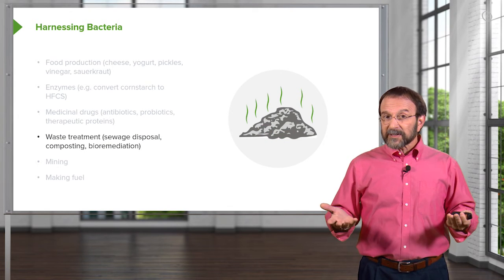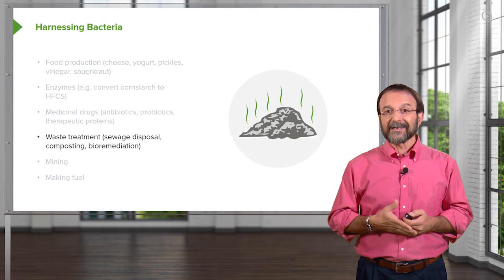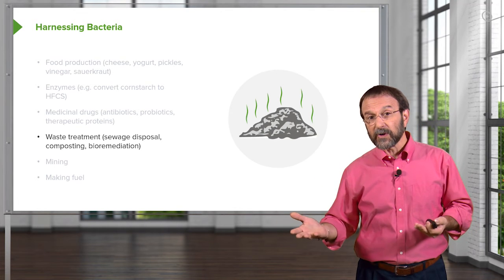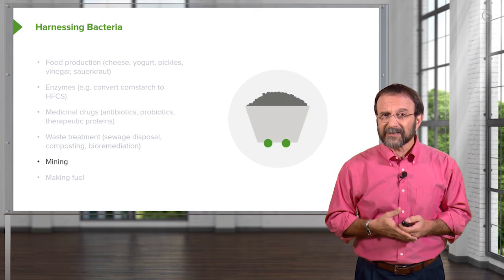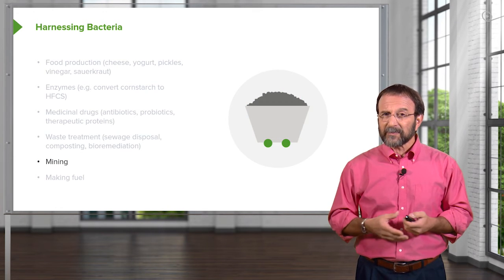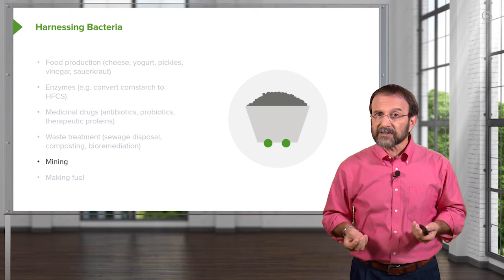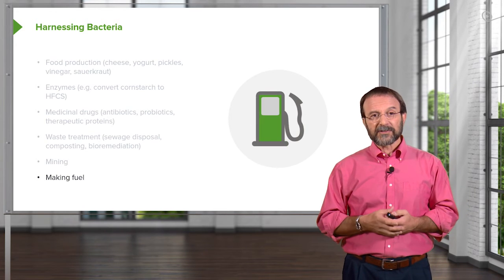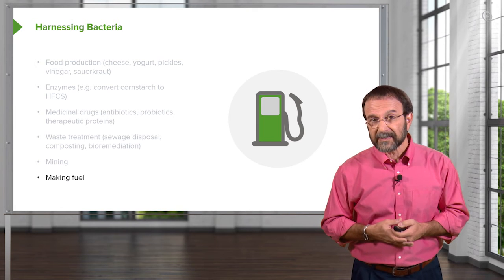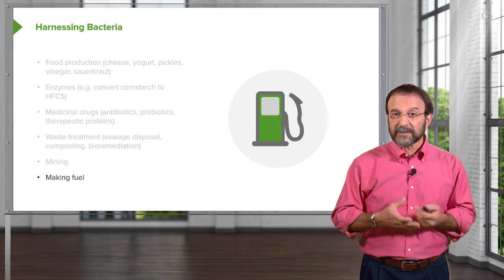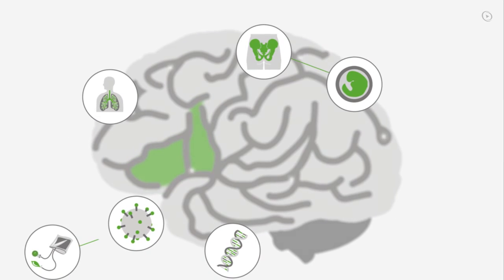We treat waste with bacteria — sewage disposal and composting use bacteria, as does bioremediation. If there's an oil spill, we put bacteria in it to get rid of the oil. We even use bacteria for mining; certain bacterial products help remove metals from various ores. And we also use bacteria for making fuel — the ethanol present in many fuels is a product of bacterial fermentation.